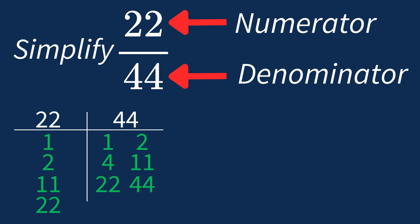So the largest common factor between 22 and 44 is 22. This means we can divide both the numerator and denominator by 22 to simplify the fraction.